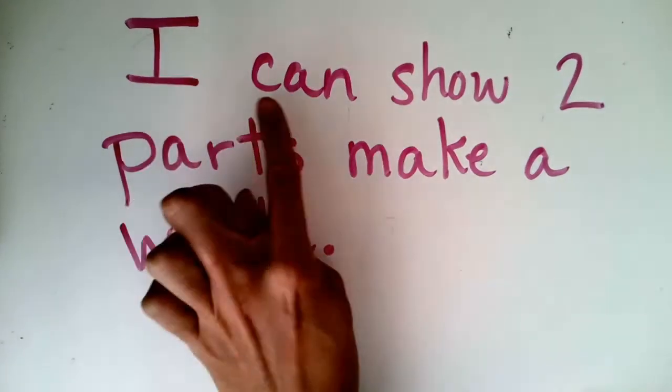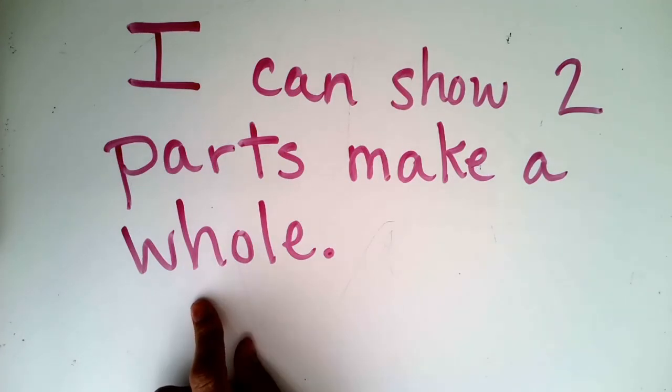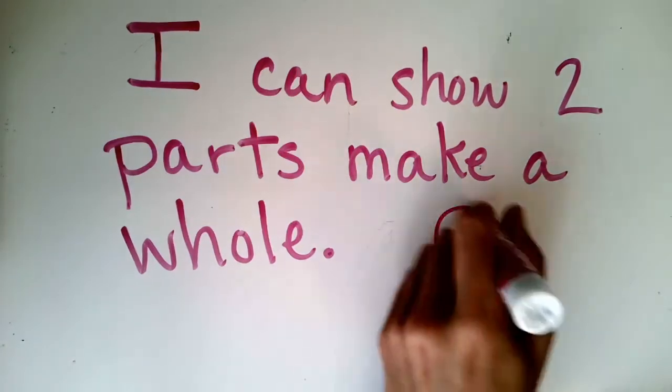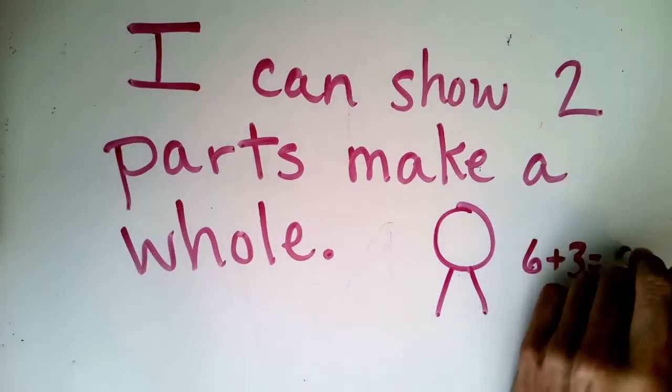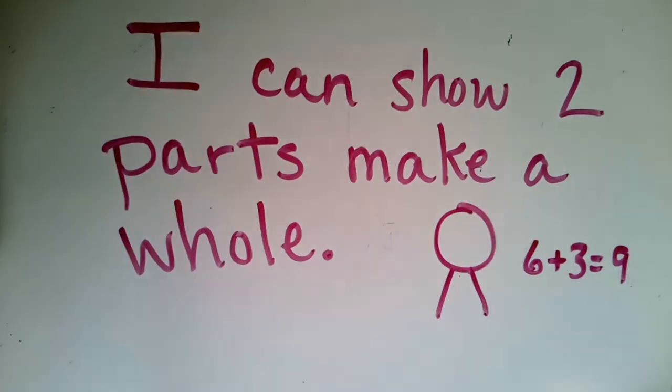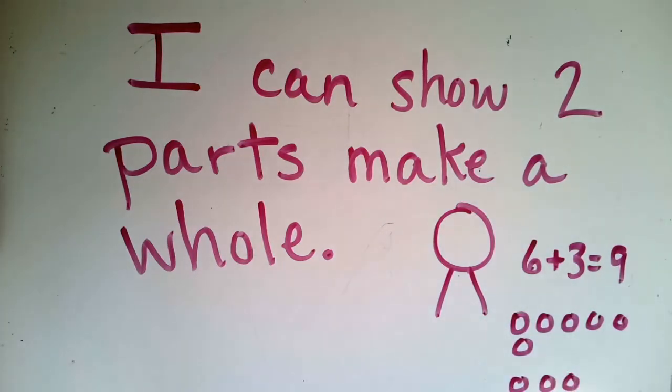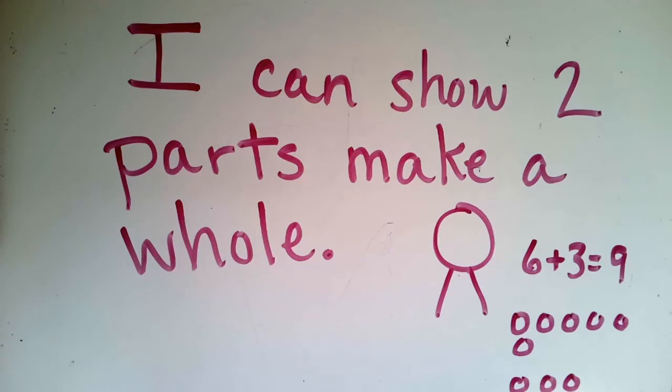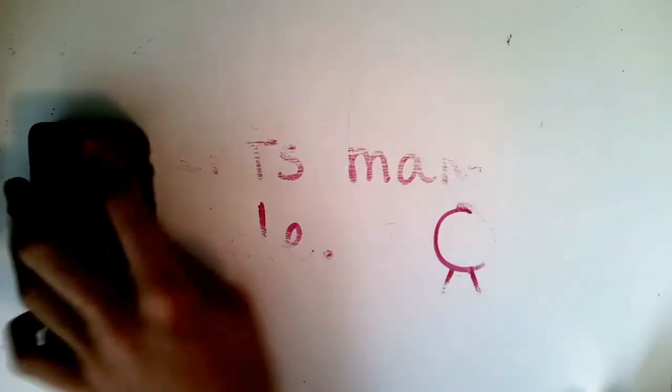Today our I can statement says I can show two parts make a whole and we've been doing a lot of this in a lot of different ways and today we're gonna learn a new way. That's just like saying I could use a number bond to show two parts make a whole or I could use a number sentence. So we're actually going to be using the number bond today and number sentences. Now our application problem today boys and girls it might seem long but we will work through it together. So grab that whiteboard, grab your marker and let's get working.